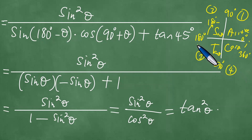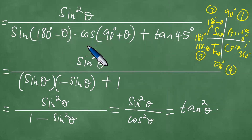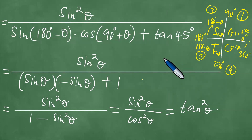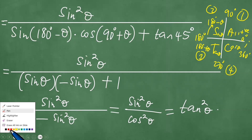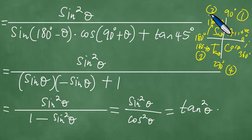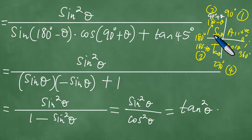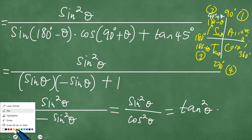180 minus theta is in quadrant two, in which the sine is positive — that is why the result is positive. 90 plus theta: if you're moving from 90 to 180 degrees, you're talking about 90 degrees plus theta. 90 degrees plus theta puts you in the second quadrant, in which only the sine is positive and therefore the cosine becomes negative.